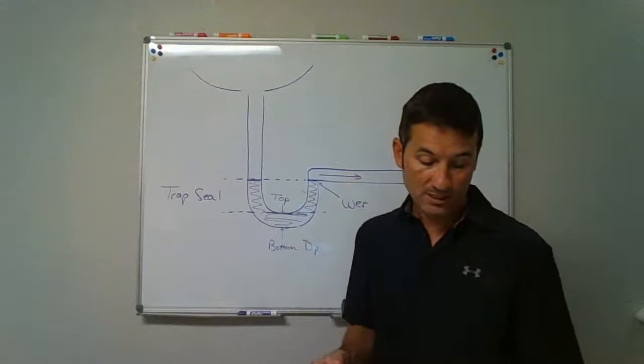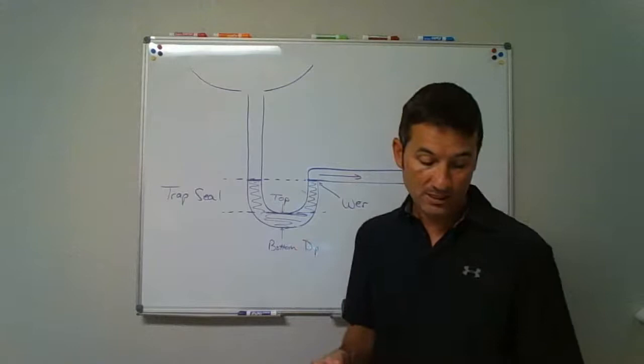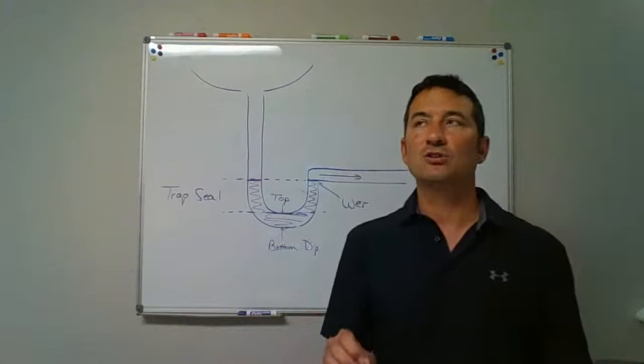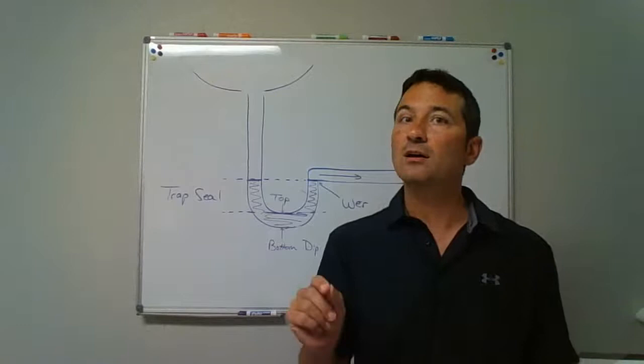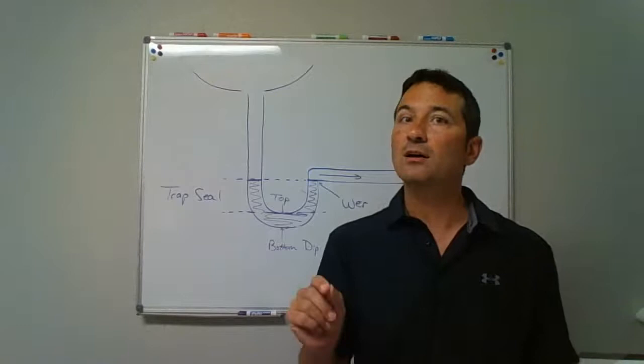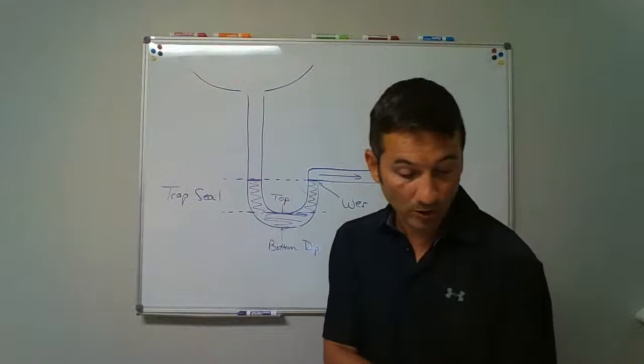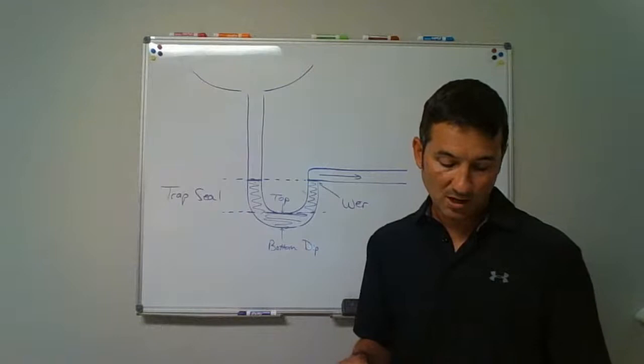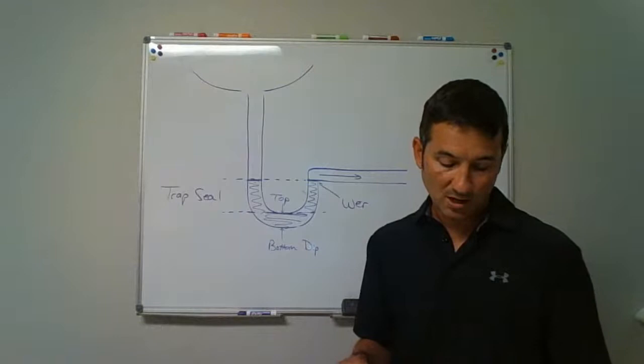Waste refers to water that does not contain fecal matter — so a waste pipe does not connect to a toilet. Soil, on the other hand — such as a soil stack or soil pipe — is piping that connects to toilets. Soil has toilets on it; waste does not.